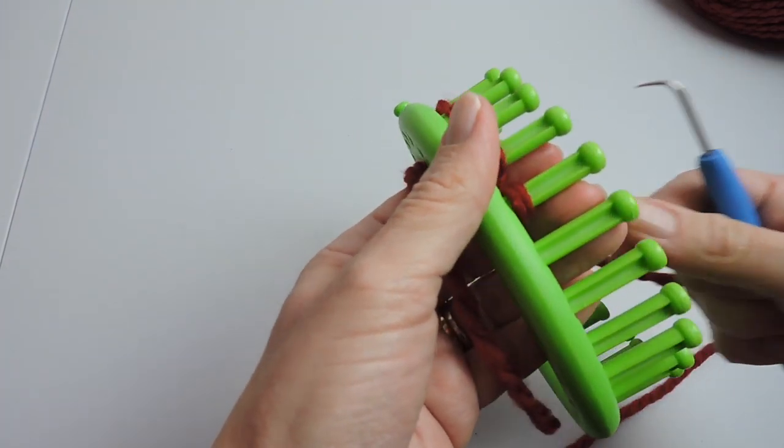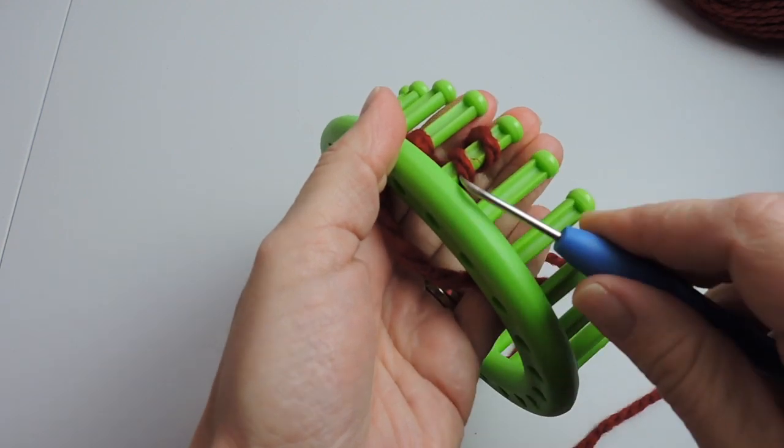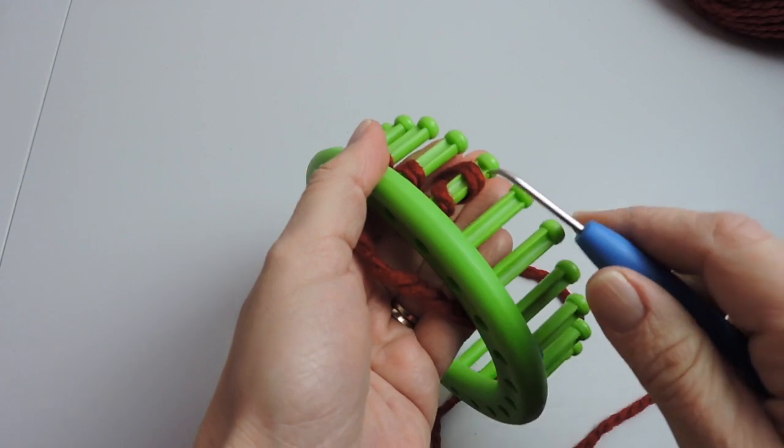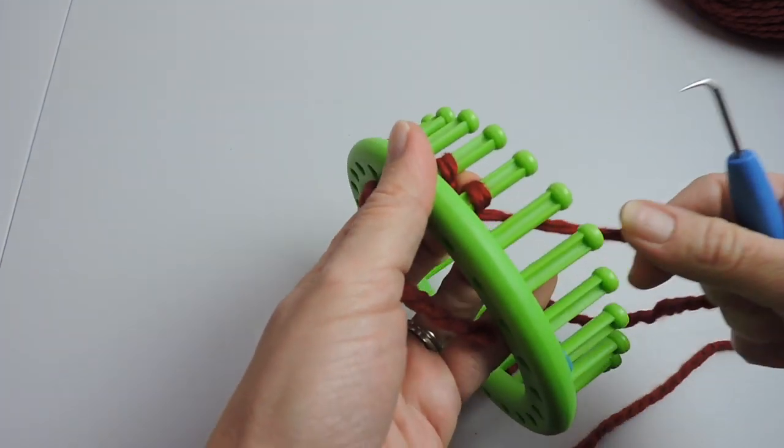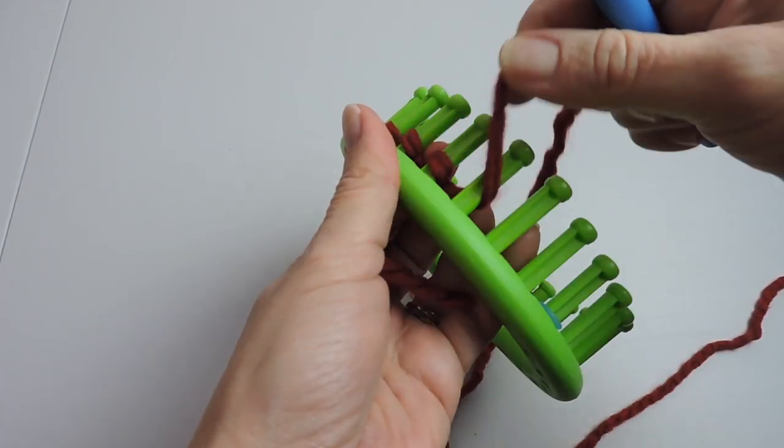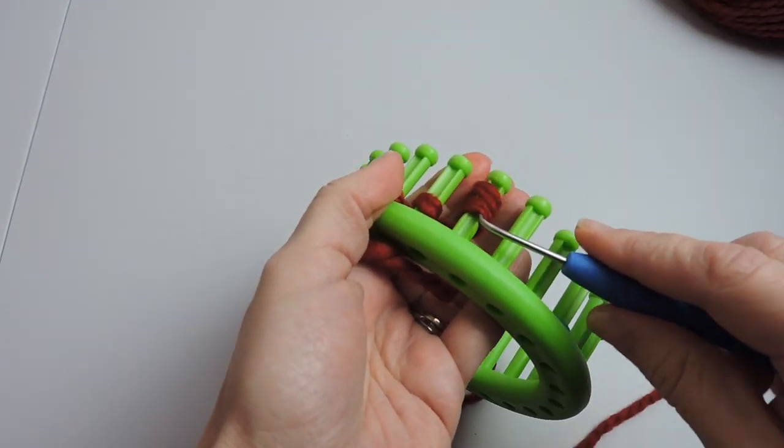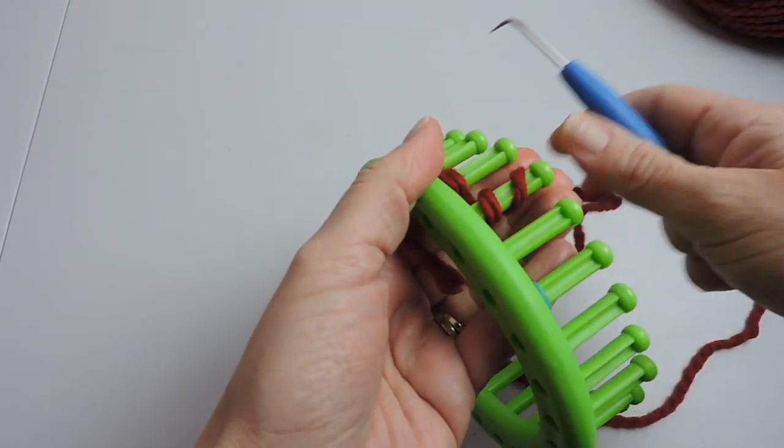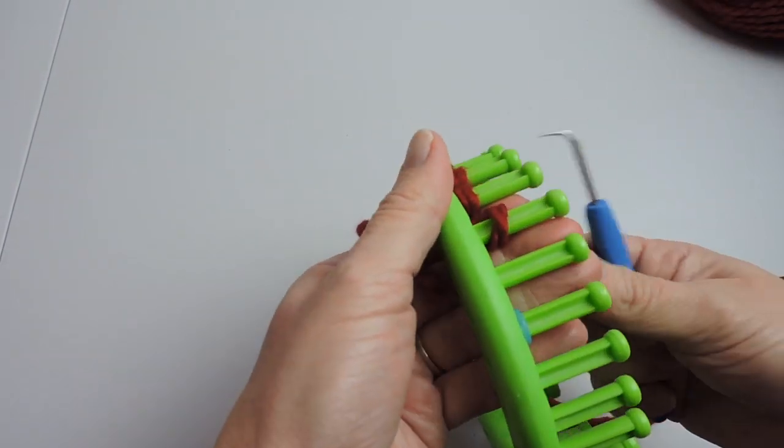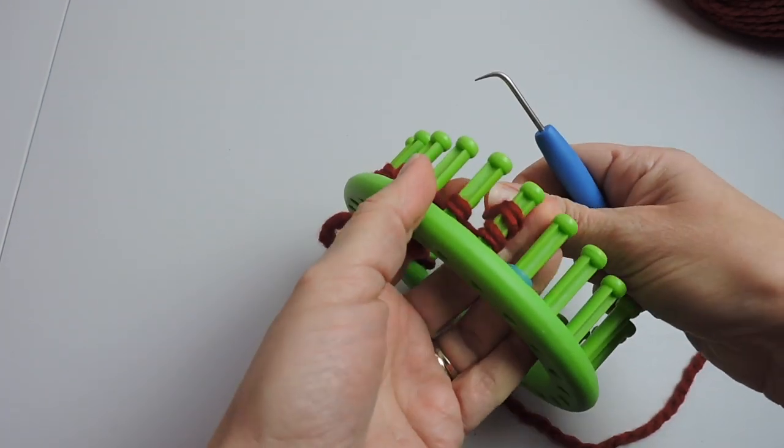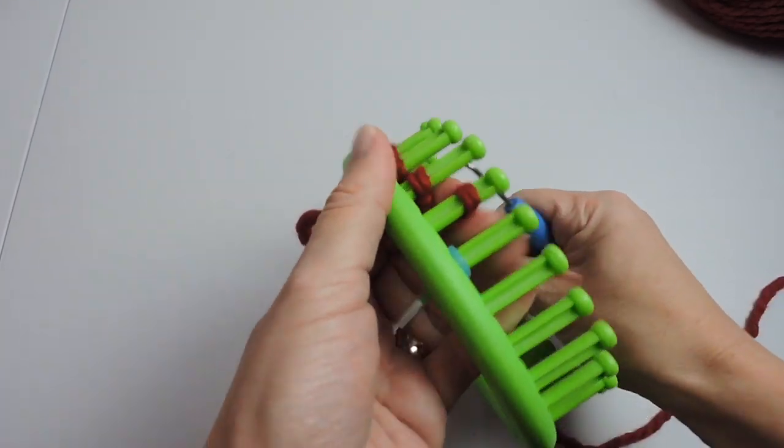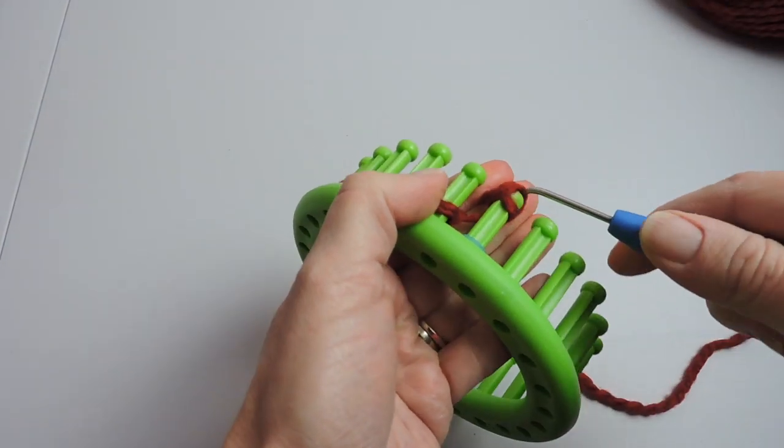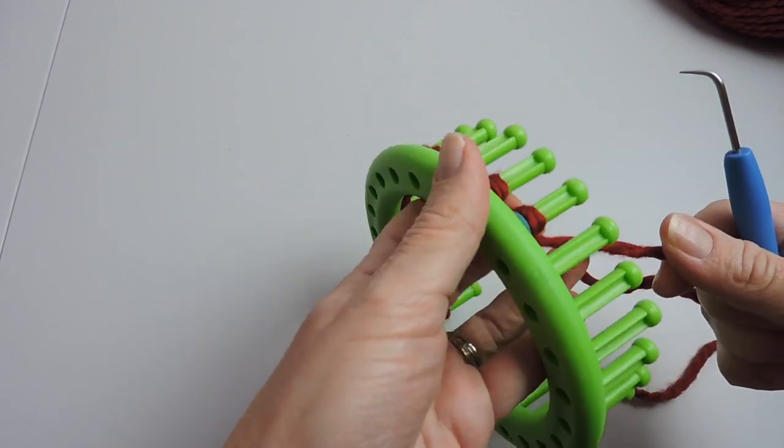I like this cast on because it's a little bit tighter to me in my opinion than the e-wrap cast on. I just it works well for me for what I'm trying to do here so that is why I chose this cast on. If you have another cast on that you like better feel free to do that as well. So now you can see my stitch marker is here so this is my 12th peg so I'm just going to take that over the top stitch.